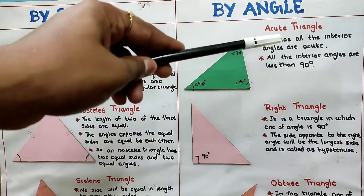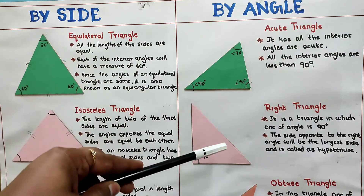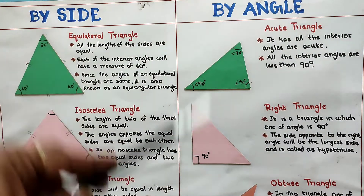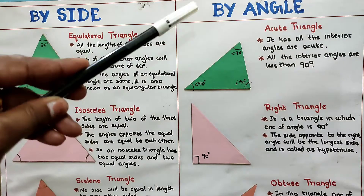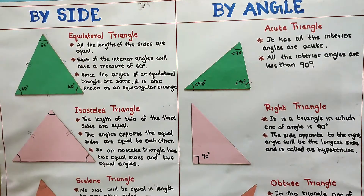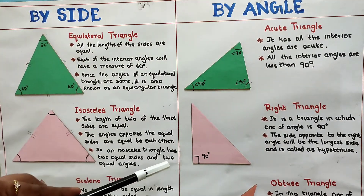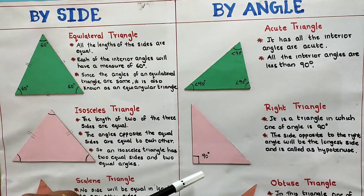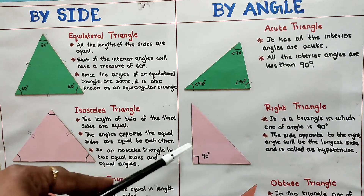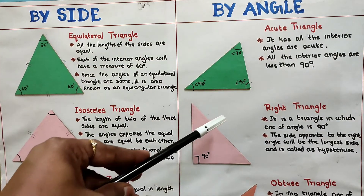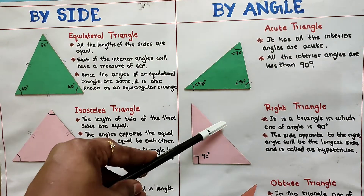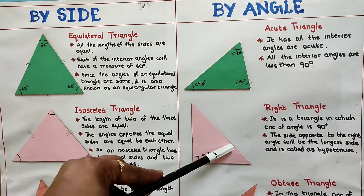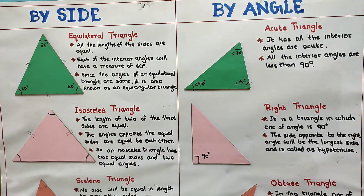The next one is right triangle. For a right triangle, one angle will be 90 degrees. It is a triangle in which one of the angles is 90 degrees. The side opposite to the right angle will be the longest side and is called the hypotenuse. So one angle will be 90 degrees and the side opposite to that particular angle will be the longest side, known as hypotenuse.